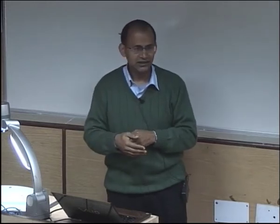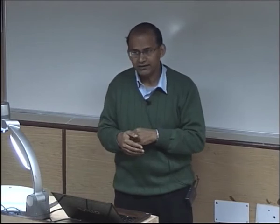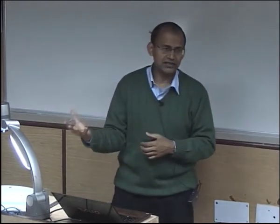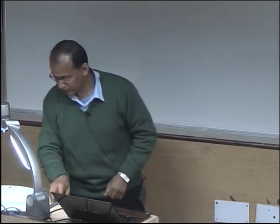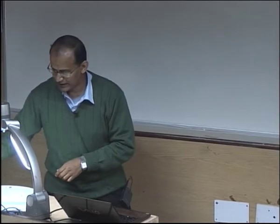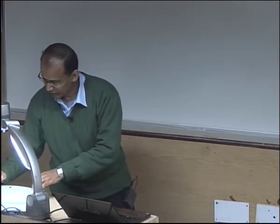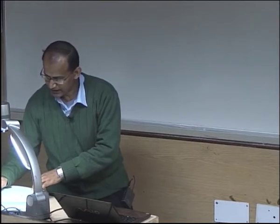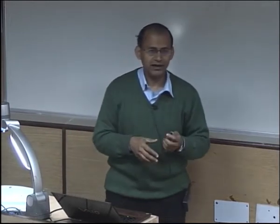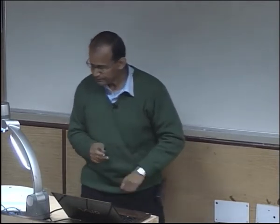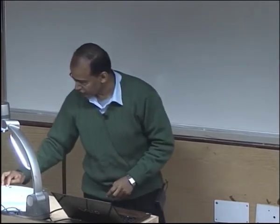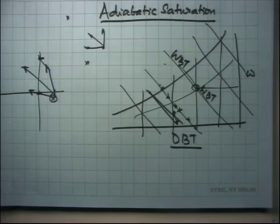DBT and WBT are popular acronyms for dry bulb temperature and wet bulb temperature in psychrometry. A desert cooler is a typical example of an adiabatic saturator, and the adiabatic saturation process is characterized by a constant wet bulb temperature line — any state point on that line has the same WBT. Now, to the next question: what is the relationship between enthalpy and wet bulb temperature? Is a constant WBT line also a constant enthalpy line?